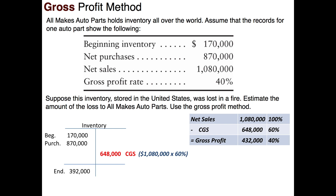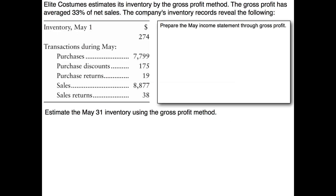Now it's your turn. We have a slightly more complicated example. Elite Costumes estimates its inventory by the gross profit method; gross profit has averaged 33% of net sales. This time we're given purchases, purchase discounts, and purchase returns separately rather than net purchases, and we're given sales and sales returns rather than net sales. Estimate the May 31st inventory and prepare the May income statement through gross profit. Push pause and work this out, then we'll come back and discuss it together.